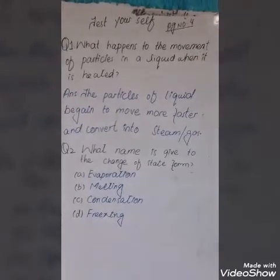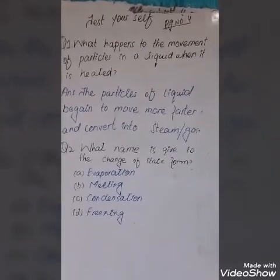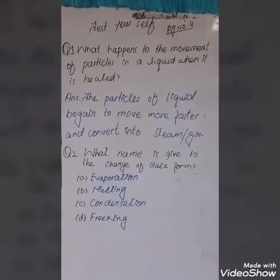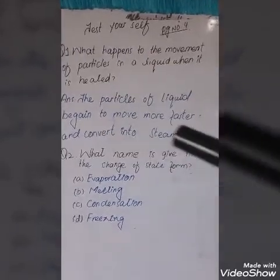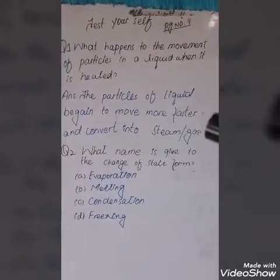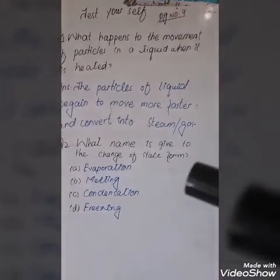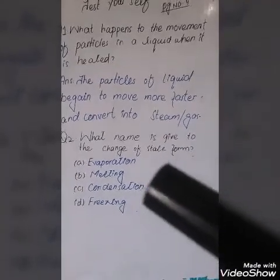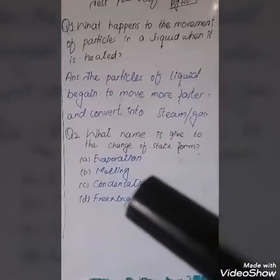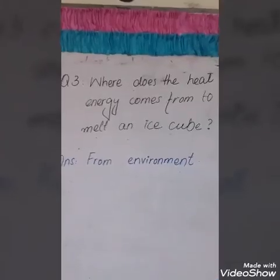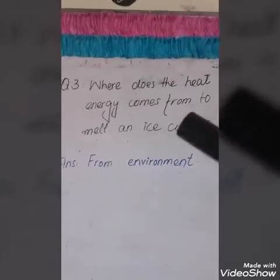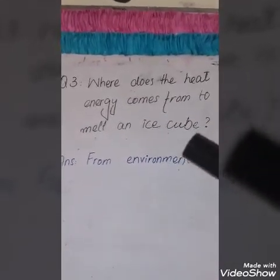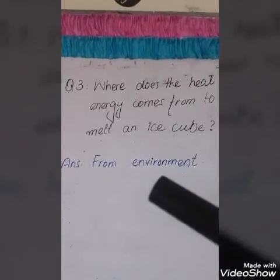Test Yourself page four. Question one: What happens to the movement of particles in a liquid when it is heated? Answer: The particles begin to move faster and convert into steam or gas. Question two: What name is given to the change of state? Options: a) evaporation b) melting c) condensation d) freezing. Question three: Where does the heat energy come from to melt an ice cube? Answer: From the environment.